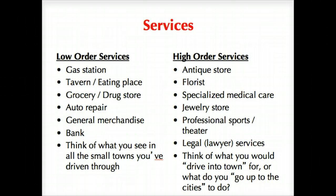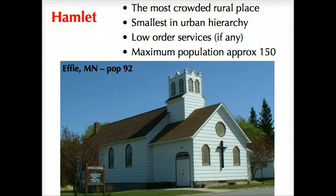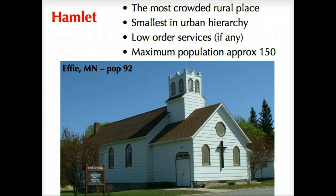Starting from the smallest, a hamlet is found primarily in rural areas where there might be a small core centered around maybe a church or a gas station. If there are any services at all, this could be a maximum population of 150. Generally speaking, the population is pretty dispersed around the area, and you're probably not going to see a whole lot of population density in this kind of arrangement.